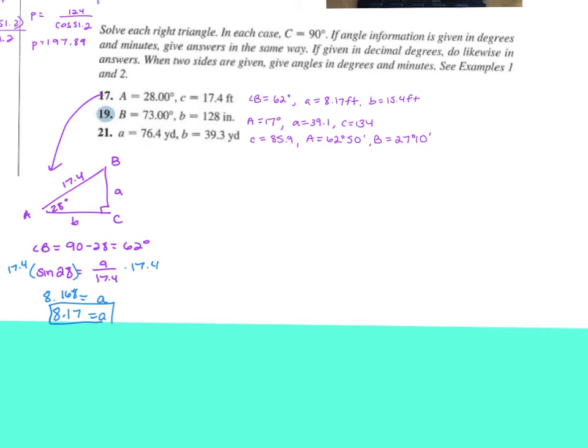I get that A is 18.168, which rounds to 18.17. Then the last thing missing from this triangle is side B. I want to stick with the original information. Angle A and hypotenuse B would be adjacent. So, cosine of 28 would equal B over 17.4. Multiply 17.4 on both sides. And I get 17.4 times the cosine of 28. And that gives me B is 15.363, which rounds to 15.36.